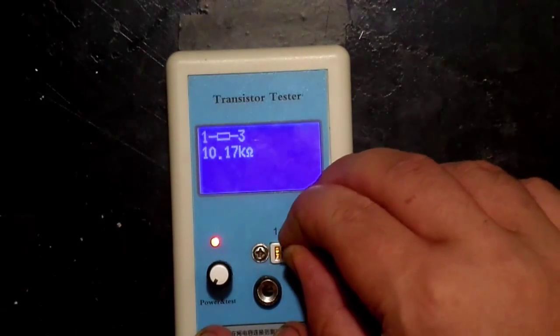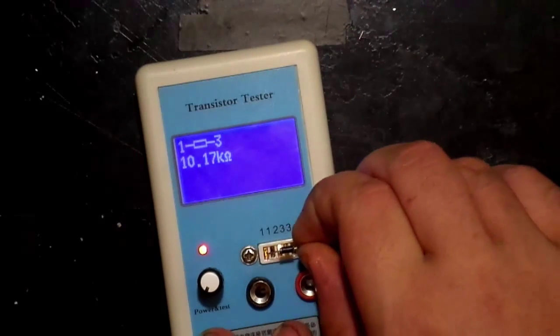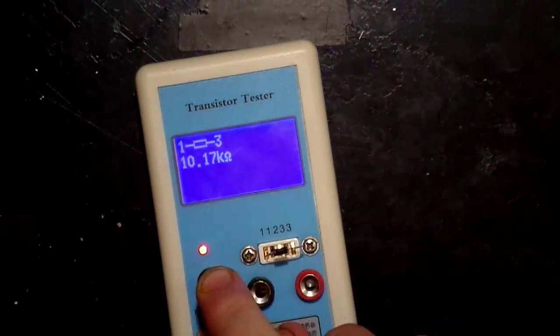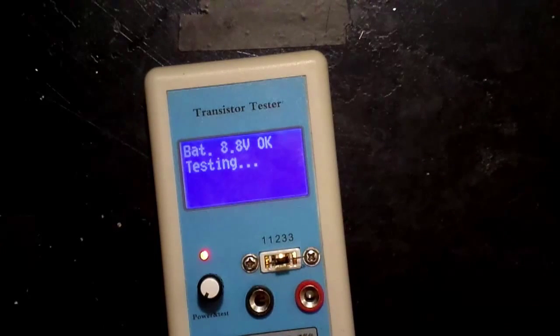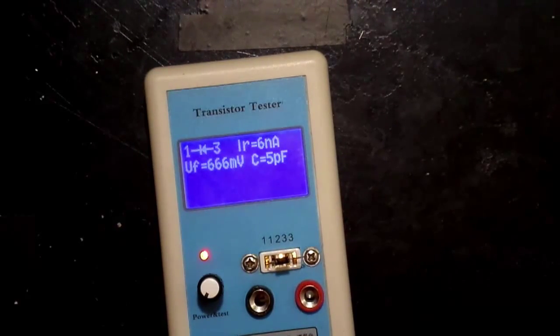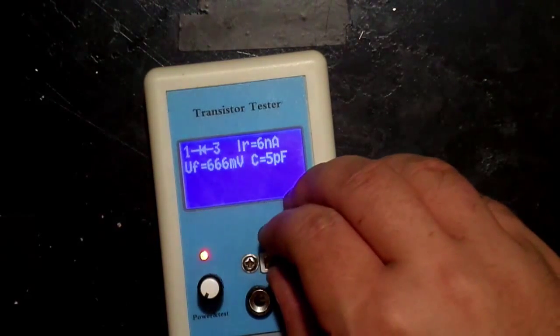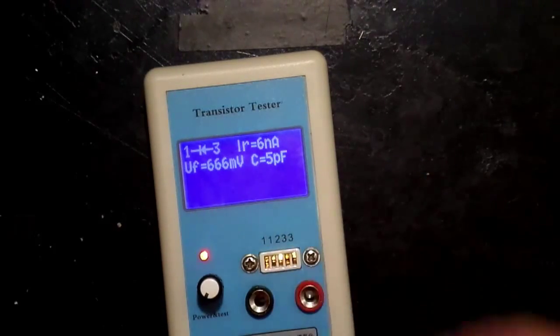And now we're going to test a diode. It gives me the polarity of the diode, and the minimum operational amperage, voltage and capacitor.